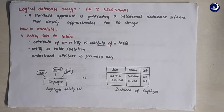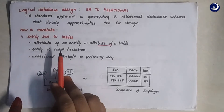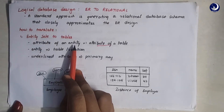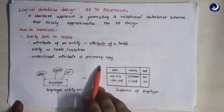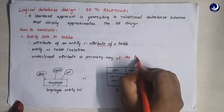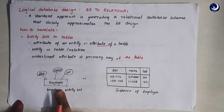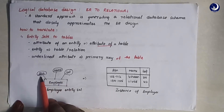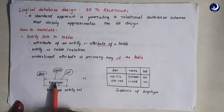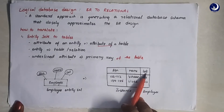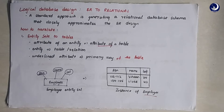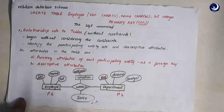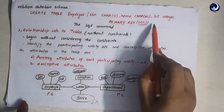The mapping of an entity set to a relation is straightforward. The attributes in an entity are transformed into the attributes of a table. The entity is treated as a relation, and the underlined attributes become the primary key of the table. In our example, the employee entity set has SSN, name, and lot as attributes, and SSN is the primary key. This is transformed into a table with columns SSN, name, and lot. The database schema would be: CREATE TABLE employee (SSN, name, lot, PRIMARY KEY (SSN)).